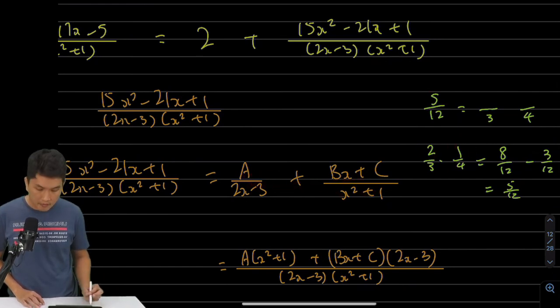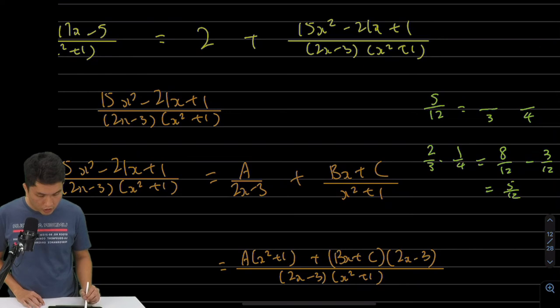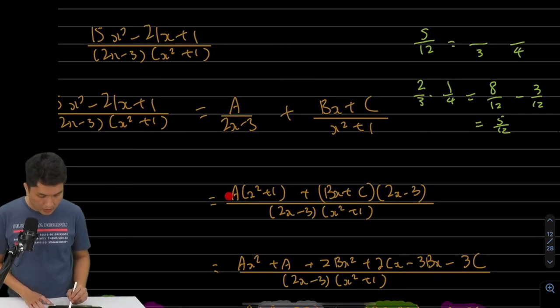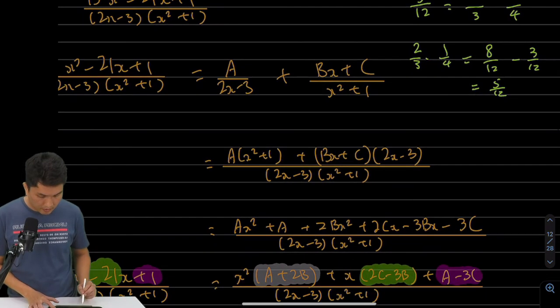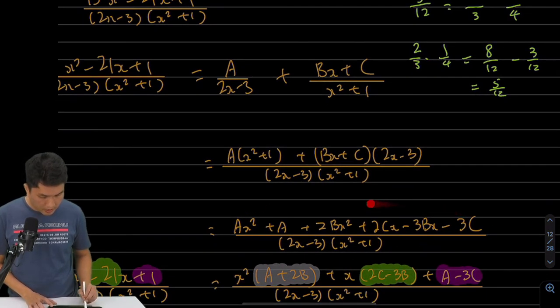So why don't I combine these two together? Multiply A by x squared plus 1. Multiply the bottom by x squared plus 1. Multiply this fraction by 2x minus 3 top and bottom. And what you have is this over here. And then the next step, of course, is to expand it out. If you expand it out, then you're going to get this.